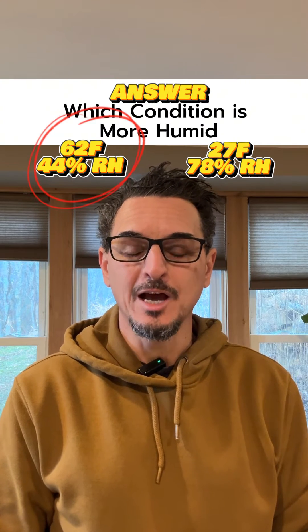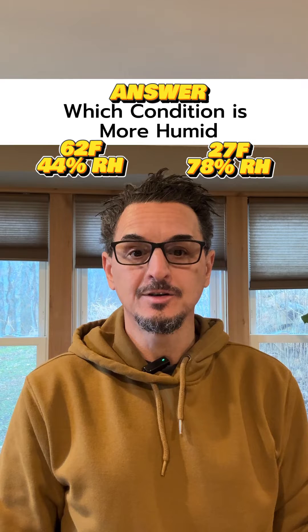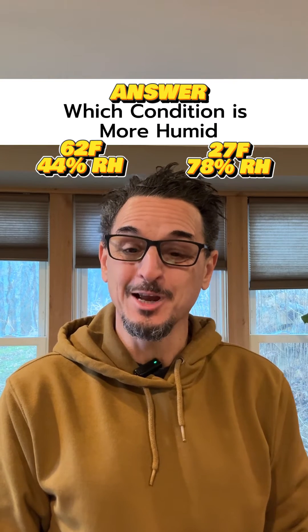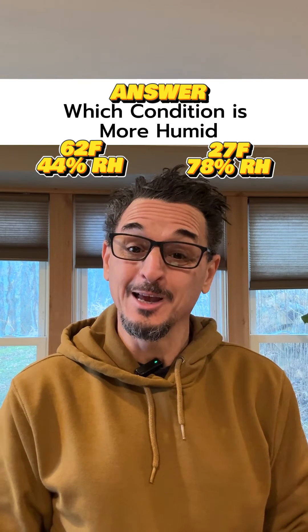And the grains, as you saw, were 36 grains versus 16. Now, if you don't have a psychometric calculator, another way to do this is actually my favorite way, which is using a psychometric chart.